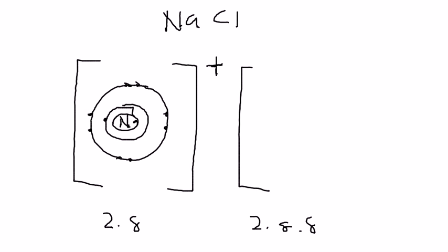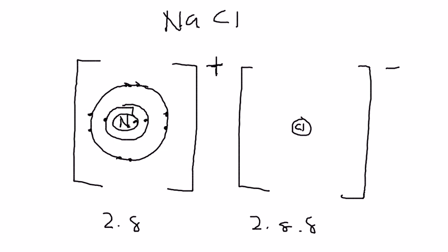Let me show you the full layer for the chloride ion. First you draw the bracket and then write the charge: negative one, because it only received one electron from sodium. Sodium loses one electron so its charge is positive one. The first layer has two electrons and we use crosses.